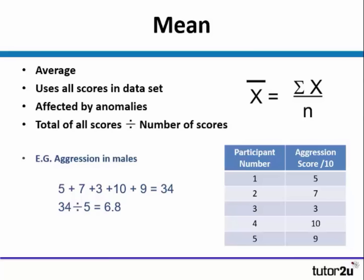Here's a little example. If we're looking at aggression in males, we have five participants. We add up all their scores: five, add seven, add three, add ten, add nine, and that gives us a total of 34. We then simply divide that by five, which is the number of participants, and that gives us the answer of 6.8.